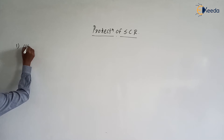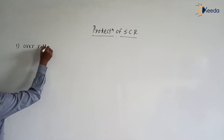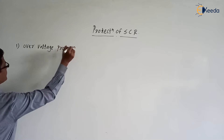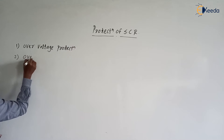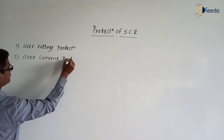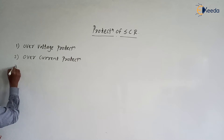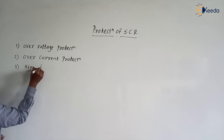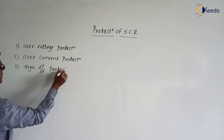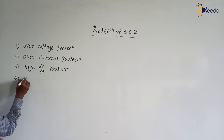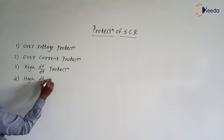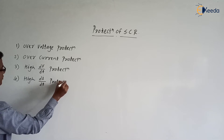The first one is over voltage protection. The second one is over current protection. The third one is high dV/dt protection. And the fourth one is high di/dt protection.